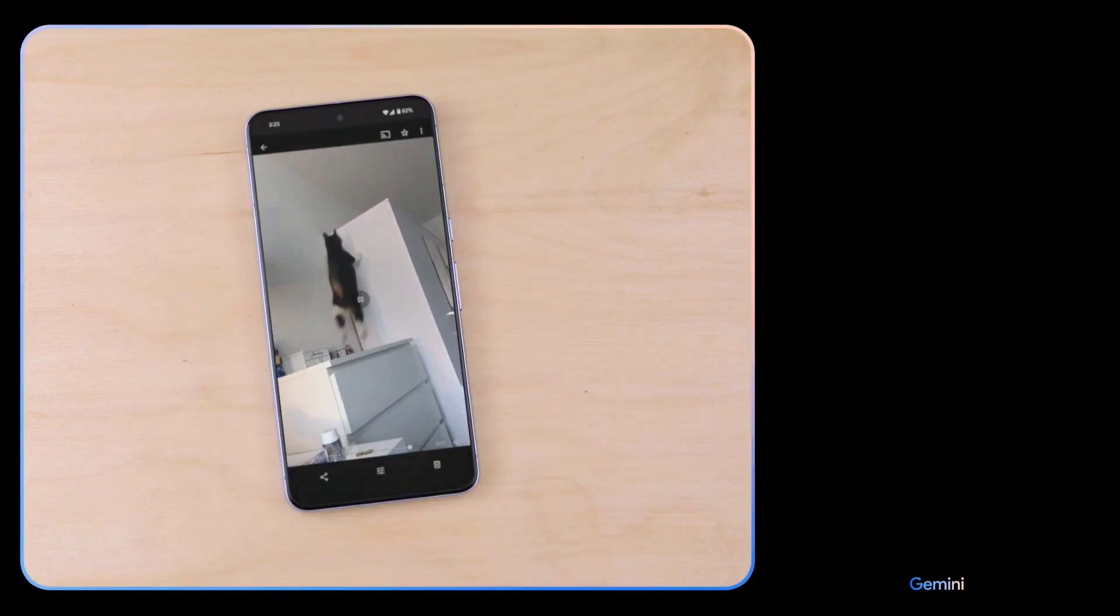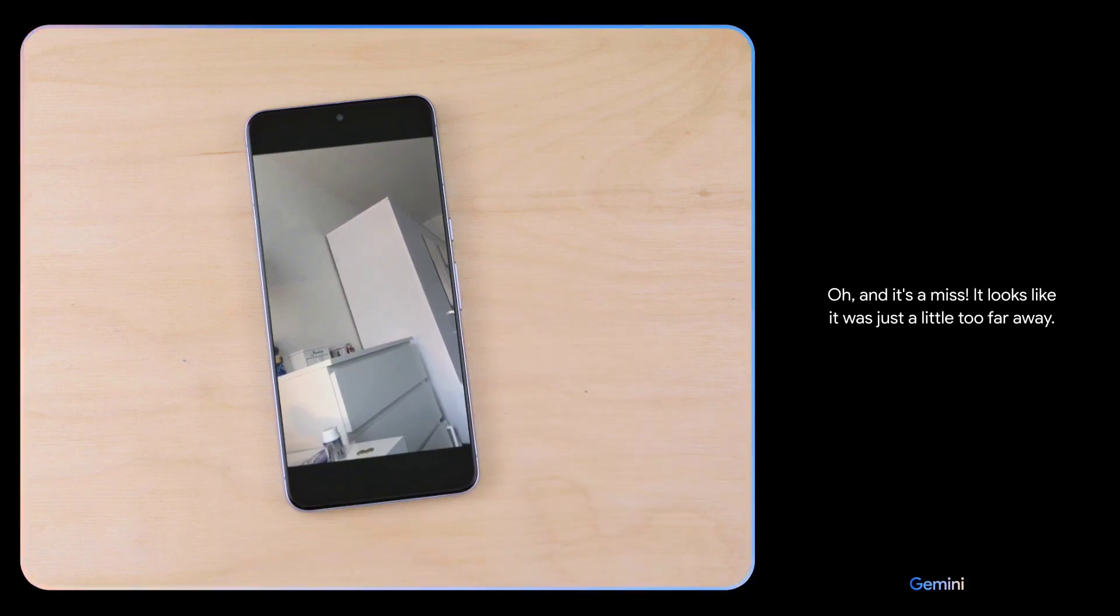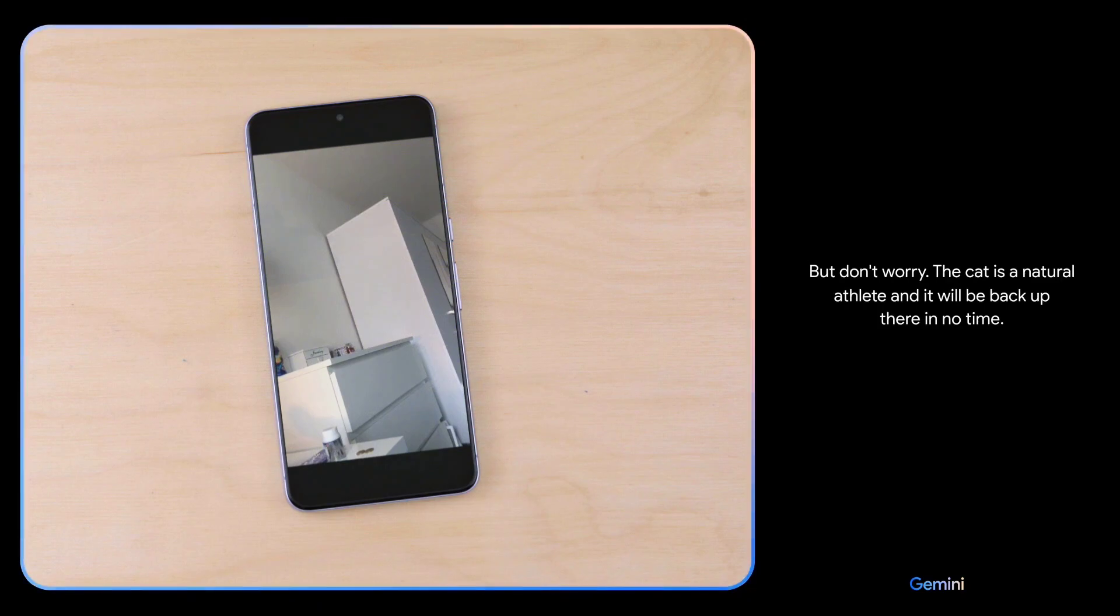What do you think might happen next? The cat is going to jump to the wall and stick the landing. It's going to be a perfect 10. Oh, and it's a miss. It looks like it was just a little too far away. But don't worry, the cat is a natural athlete and it will be back up there in no time.